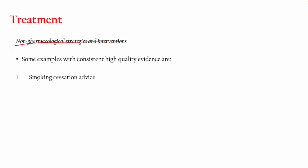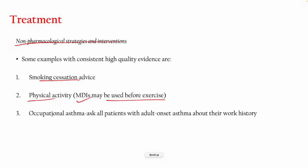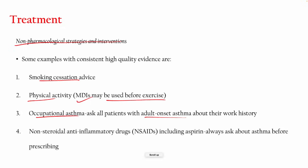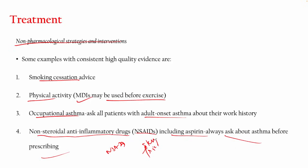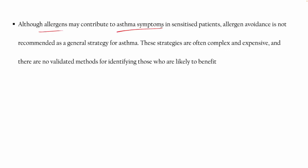If the patient has a history of smoking, you can give smoking cessation advice. Physical activity is recommended — metered dose inhalation may be used before exercise. For occupational asthma, ask the patient about their work history. Advise reduced exposure and use of a mask. NSAIDs including aspirin should be avoided, as we have already seen in drug-induced asthma — Samter's triad includes aspirin sensitivity.